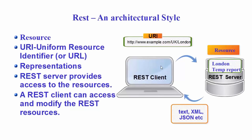Every resource should support the HTTP common operations. Resources are identified by a global ID, typically called a URI — Uniform Resource Identifier — and in some cases called a URL — Uniform Resource Locator. You can consider a URI as an address of the resource. For example, to access the temperature of London, a request is sent from a client in the form of a URI. A resource must have at least one URI — without a URI, you cannot access that resource.